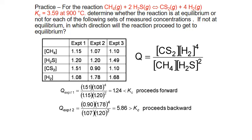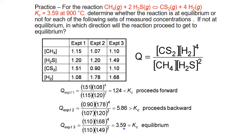Finally, in experiment three, our values give us a Q_C value of 3.59. This is exactly the same as the equilibrium constant at this temperature, so our reaction is already at equilibrium.